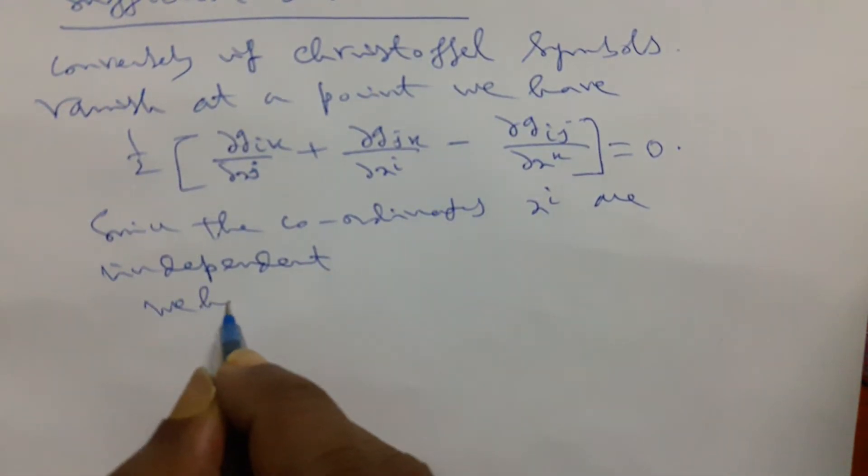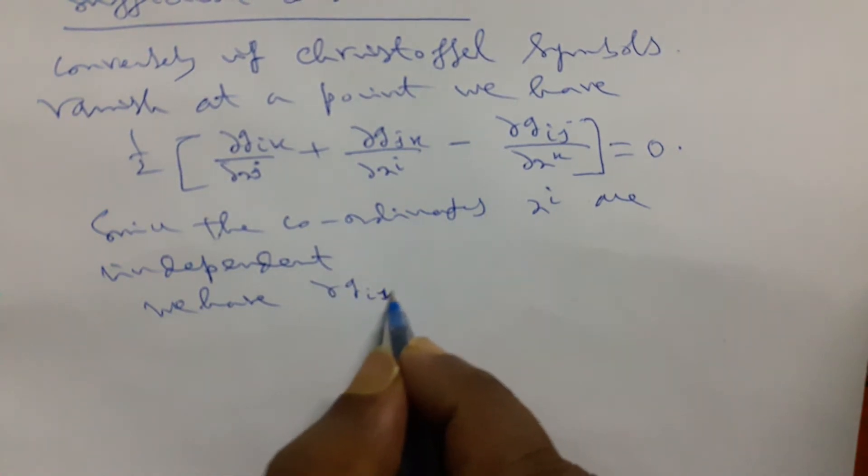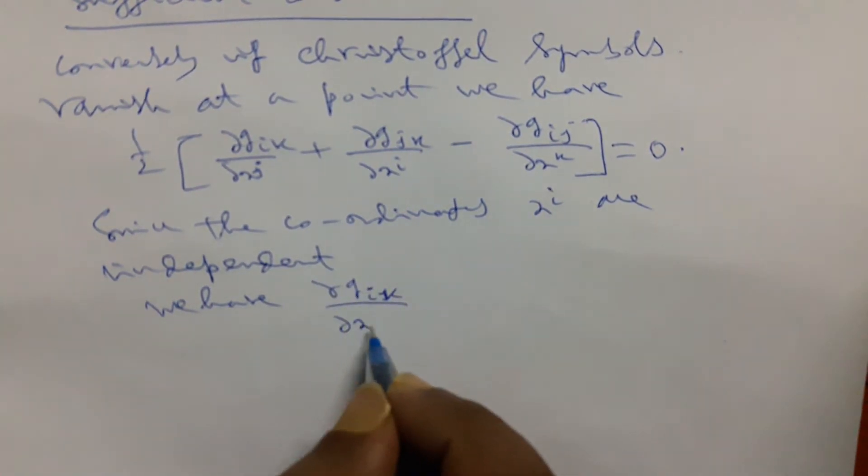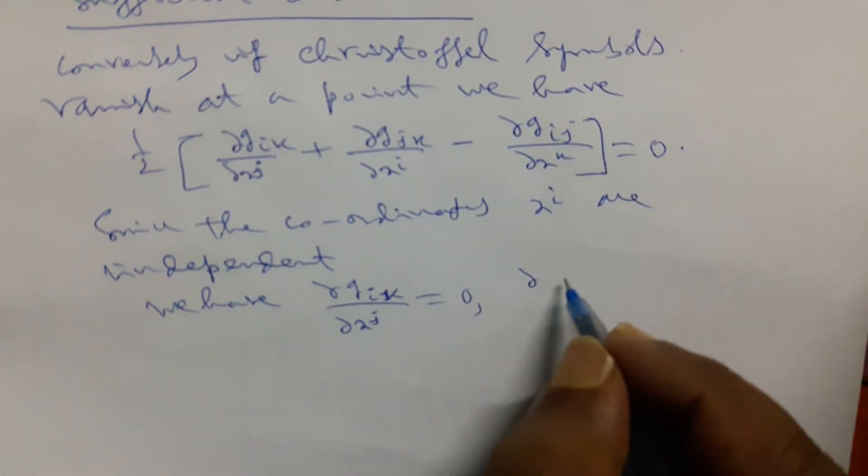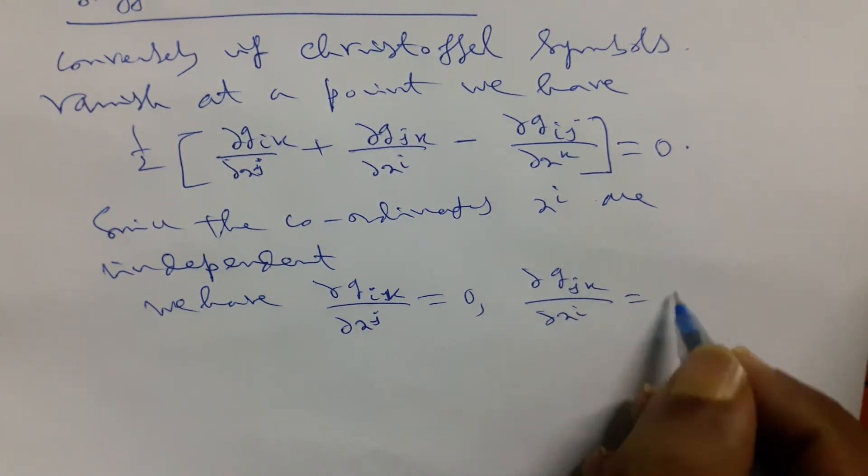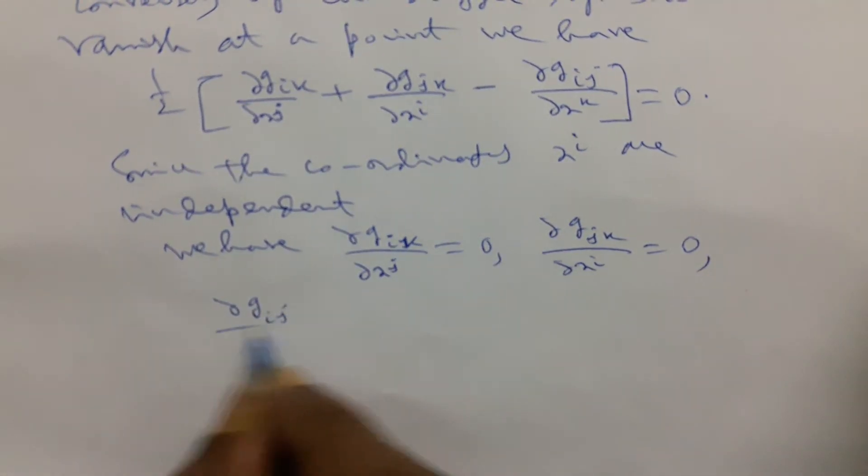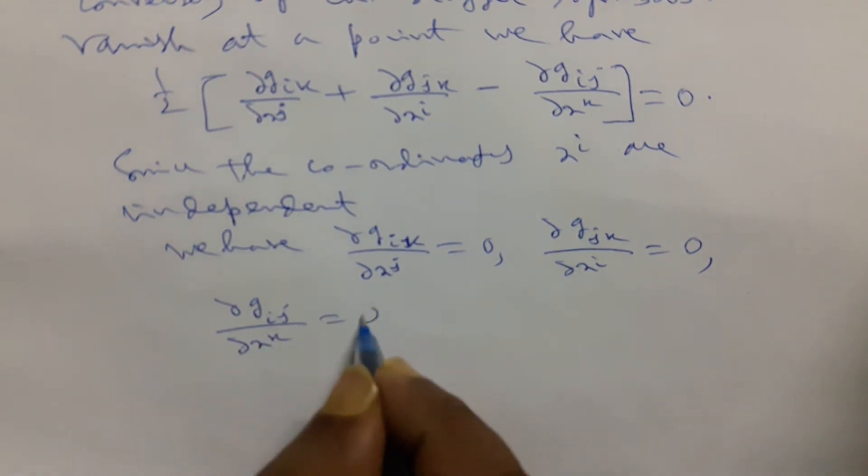We have del Gik/del xj that will be 0 and del Gjk/del xi is 0 and del Gij/del xk equals 0.